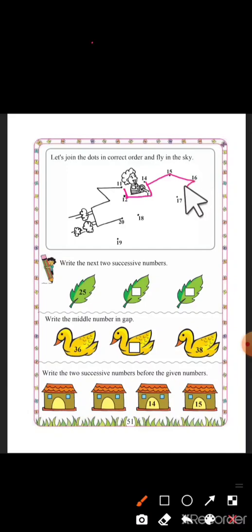16, 17, after 17, 18, then 19, and then 20. Now this is a rocket, you can color it with your favorite colors.